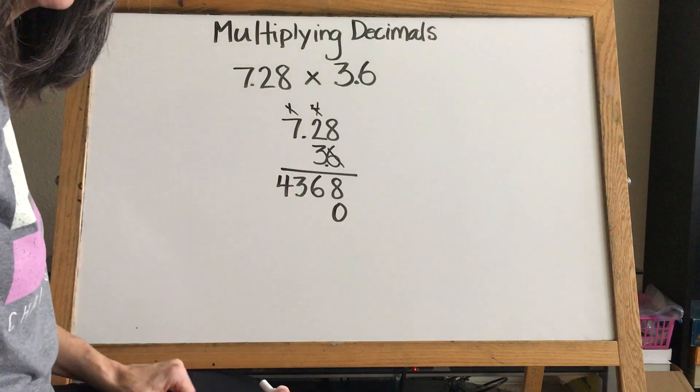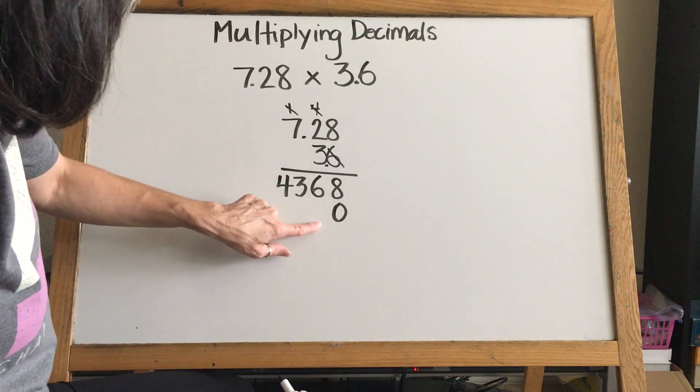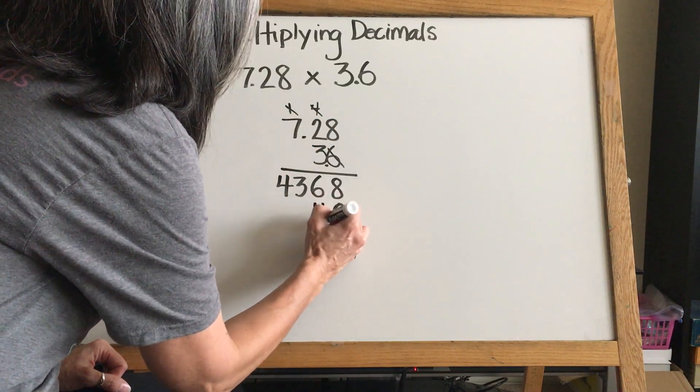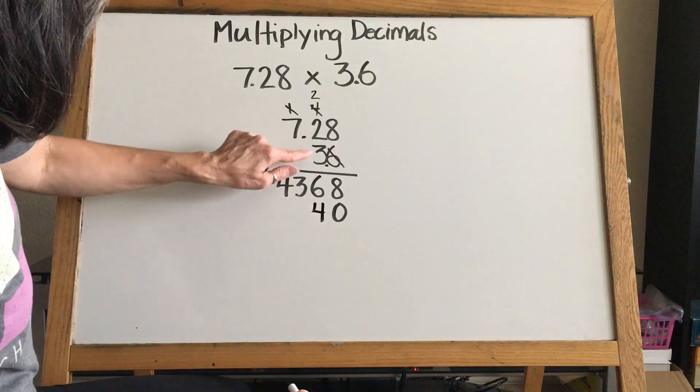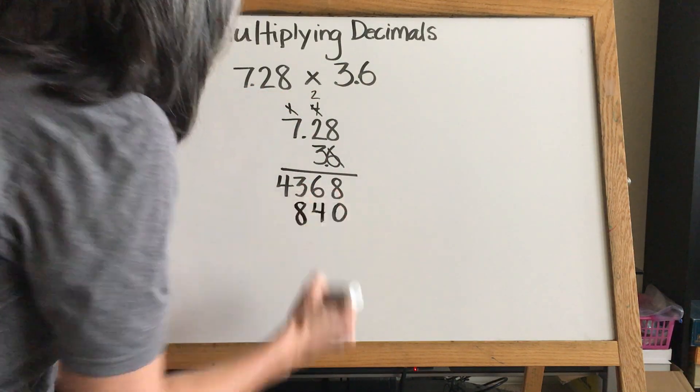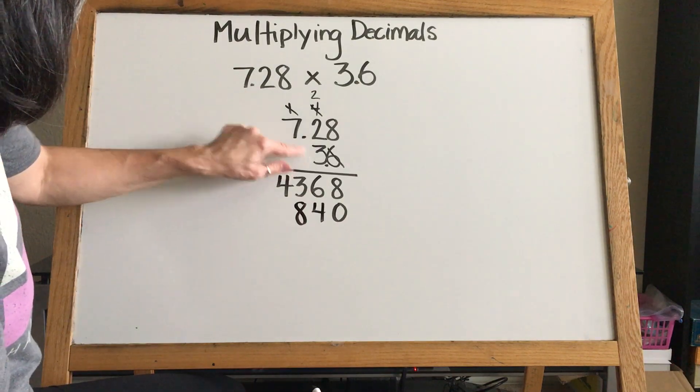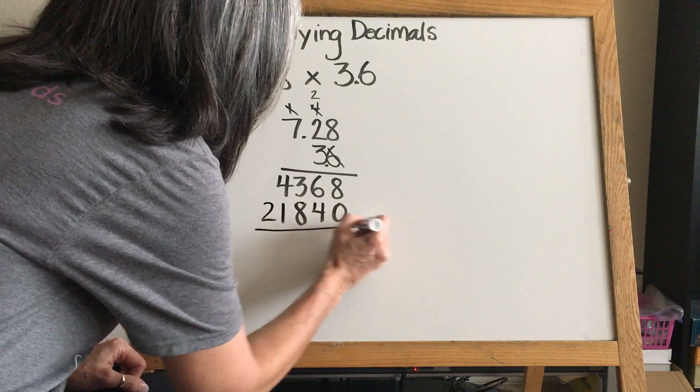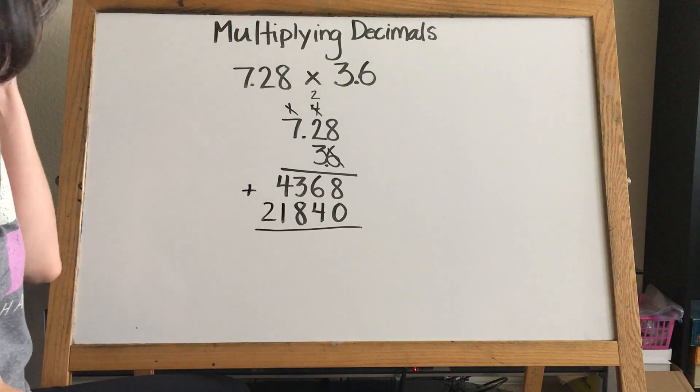We have three times eight is 24, so we're going to write our four and carry our two. Three times two is six plus two is eight. We put our eight, there's nothing to carry. Three times seven is 21. Make sure you keep your columns really straight - this is really important when you're learning to multiply with triple and double digits. Make sure everything's lined up perfectly.